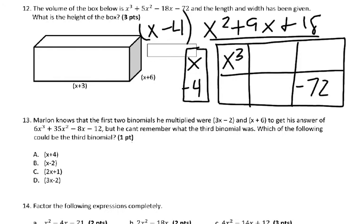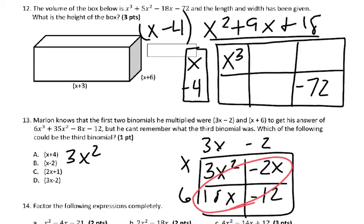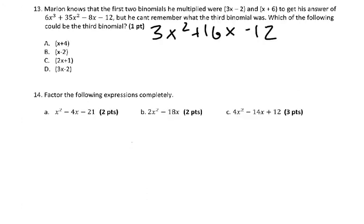In number 13, Marlin knows that the first two binomials he multiplied were 3x minus 2 and x plus 6 to get his answer of the following. But he can't remember what the third binomial was. All you had to do was first do your 3x and negative 2 and your x and 6. x and 3x is 3x squared. x and negative 2 is negative 2x. 6 and 3x gives you 18x. 6 and negative 2 gives you negative 12. So that simplifies to 3x squared. These two add to give you 16x. And you have a negative 12. There were kind of two ways you could do this.